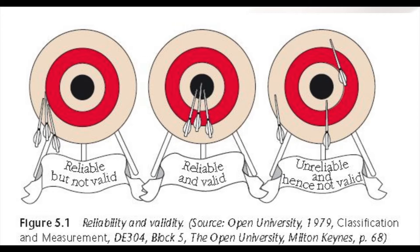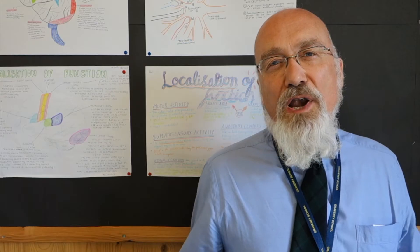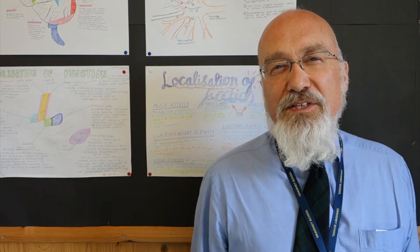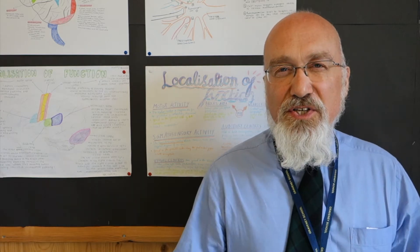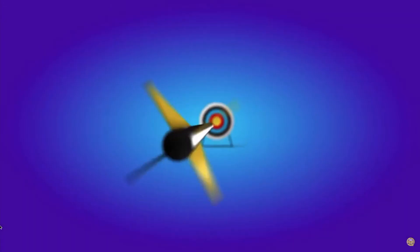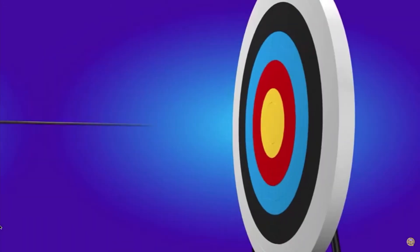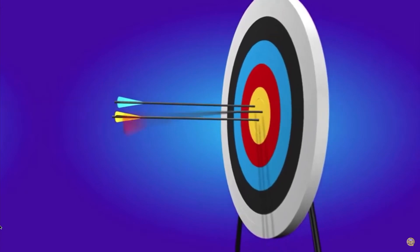The one on the right, on the other hand, isn't reliable. That archer is not hitting the same spot every time. So reliability is about consistency and repeatability in psychological measurement.